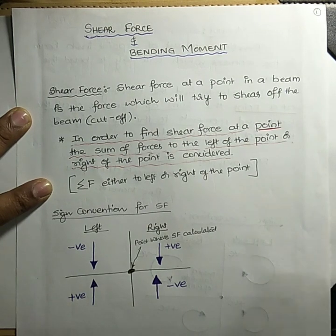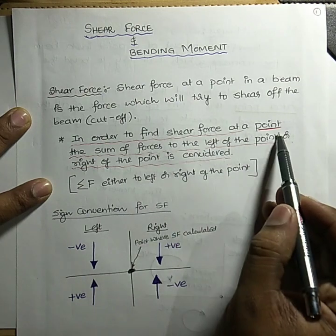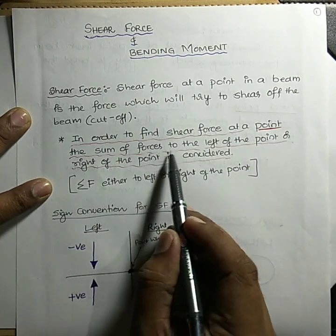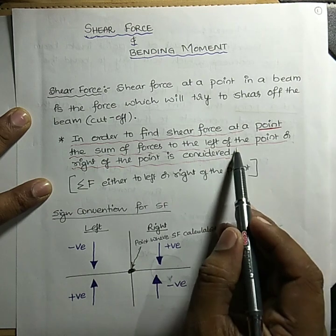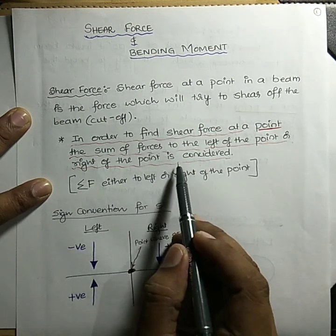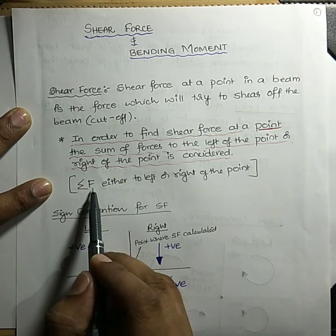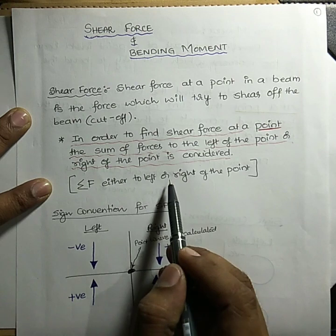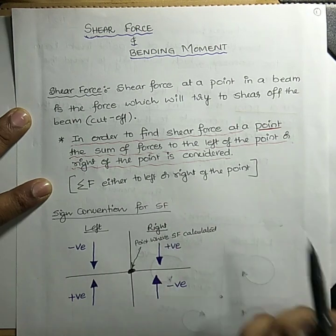In order to find the shear force at a point, we need to sum all the forces to the left of the point or the right of the point. That is, summation of forces either to the left side or to the right side of the point should be considered.